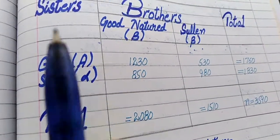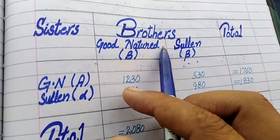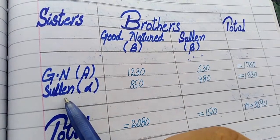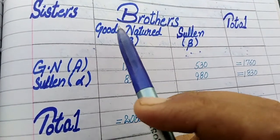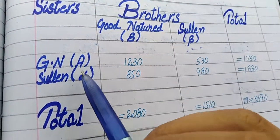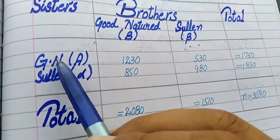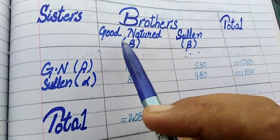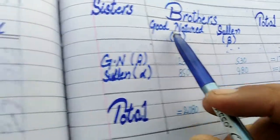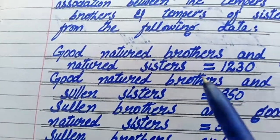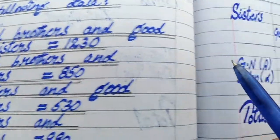Now let me set up the table. Rows: sister — good nature, sullen. Columns: brother — good nature, sullen. Good nature brother with good nature sister: 1230. Good nature brother with good nature sister: 530.